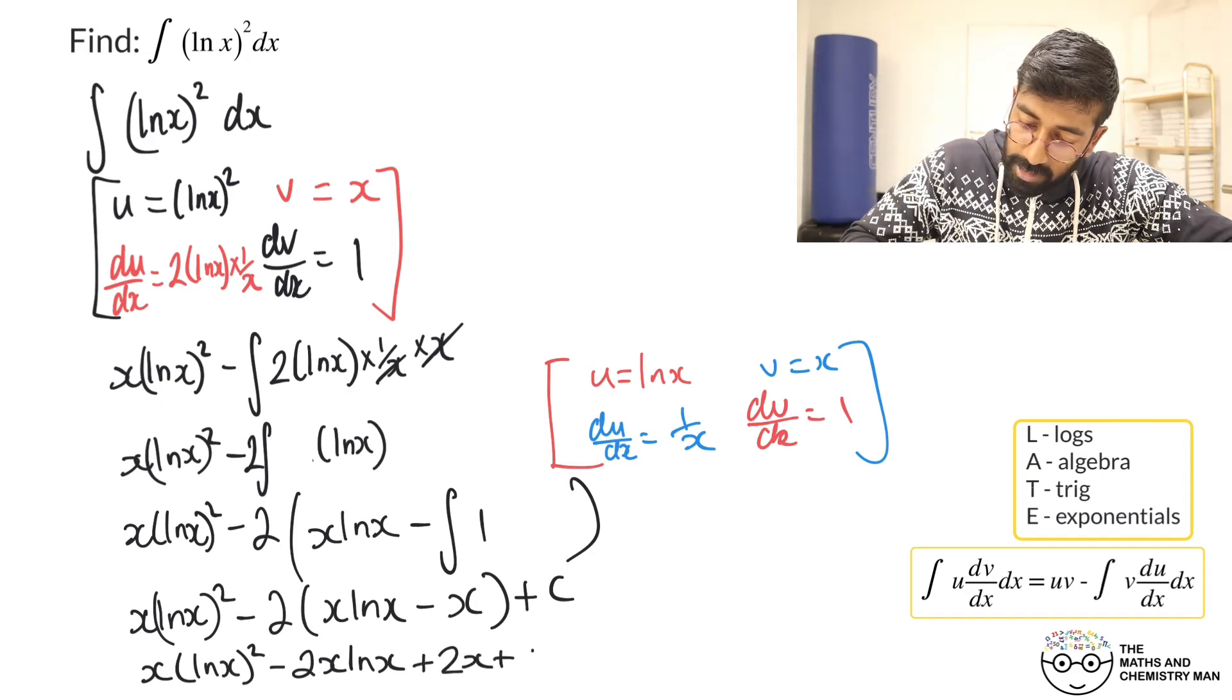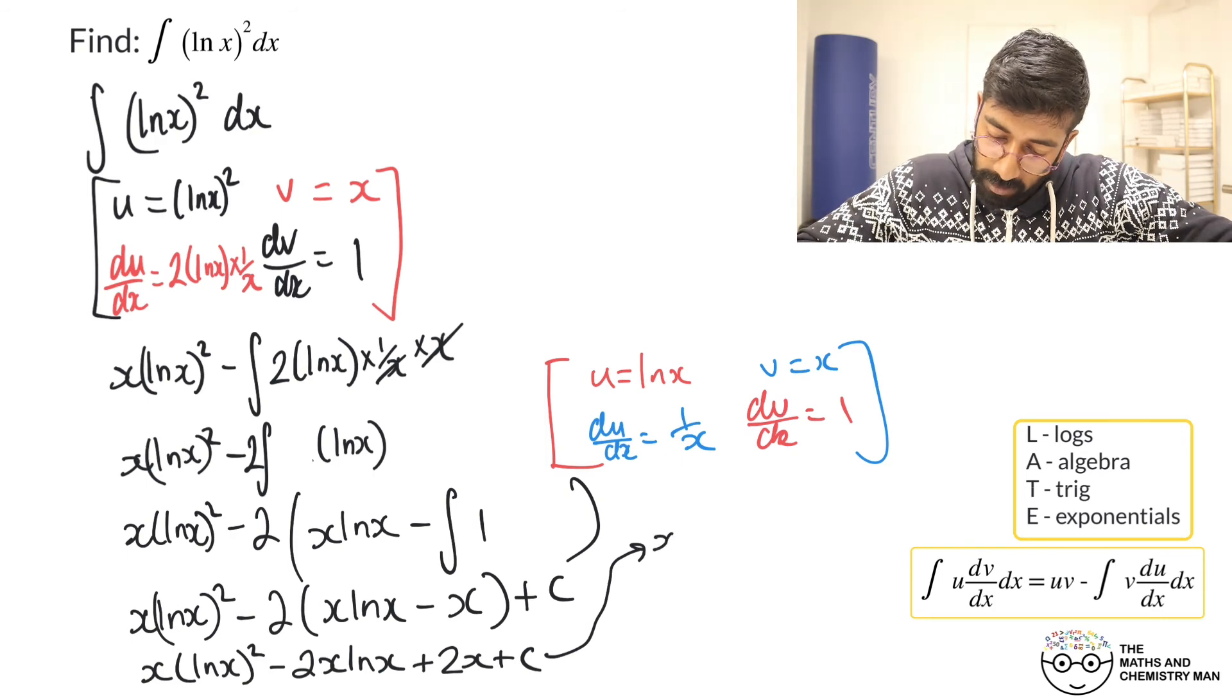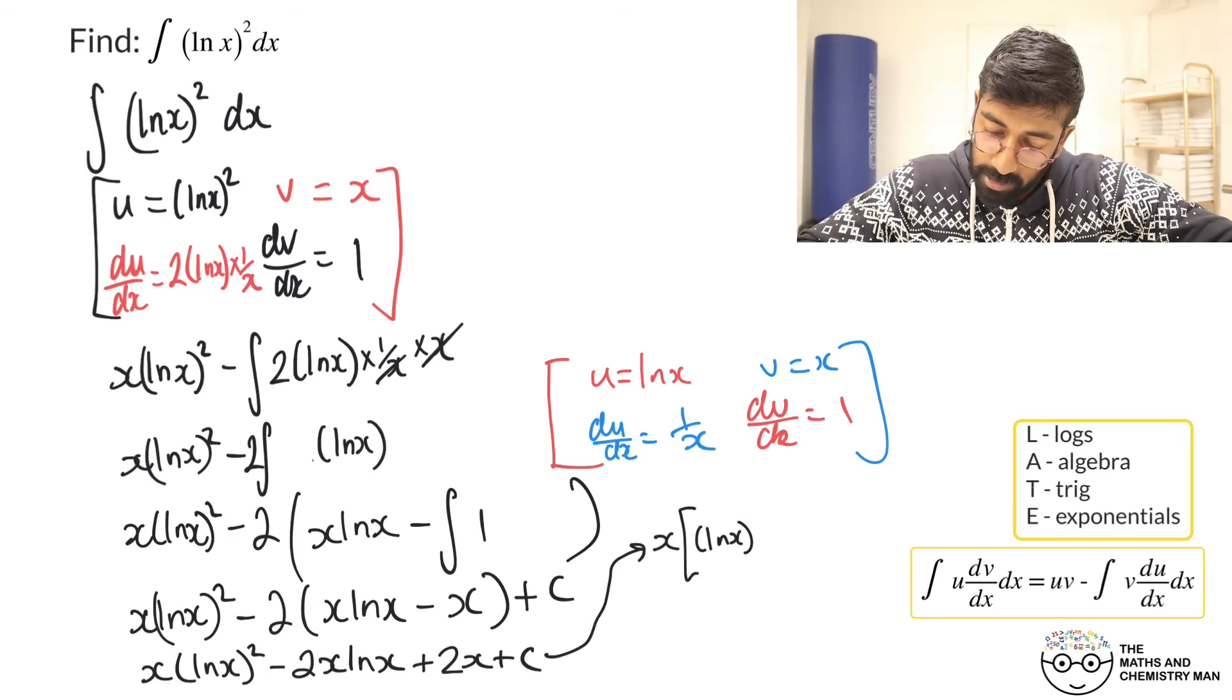So x ln(x) squared subtract 2x ln(x) plus 2x and plus c. And then we can factorize this. Let's take x out of all of that: x times ln(x) squared subtract 2ln(x) and then plus 2, close that off, plus c on the outside.